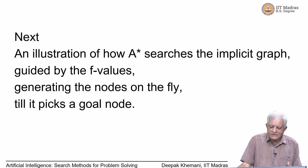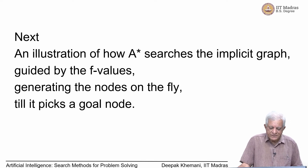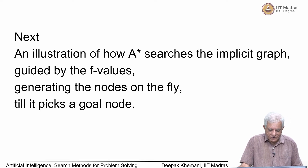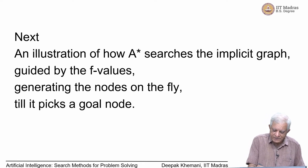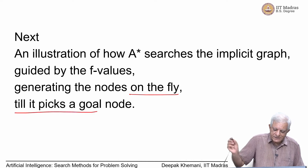A* will search the implicit graph using F values, and we will see how that happens. The nodes will be generated on the fly until it picks the goal node essentially.